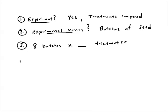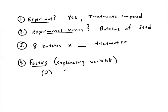So let's do number four. Identify all factors. Another name for factors is explanatory variable. And in this situation you have two. You have soil type and fertilizer.